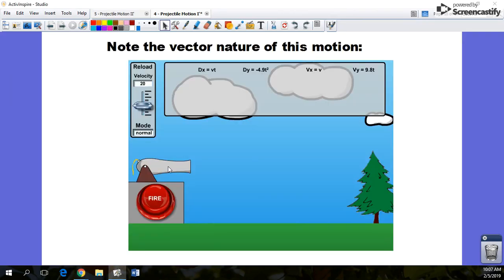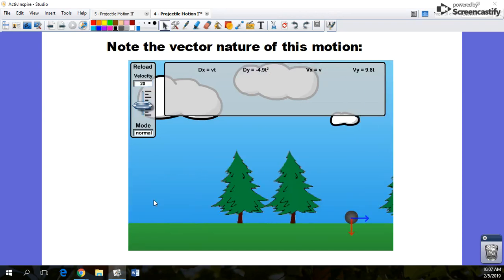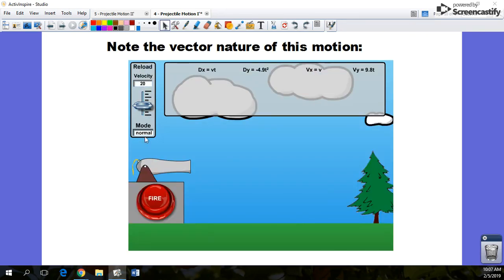It looks kind of like this. We've got a cannon. It's going to fire horizontally, and it's some distance up in the air. That went pretty fast. Let's try that again.